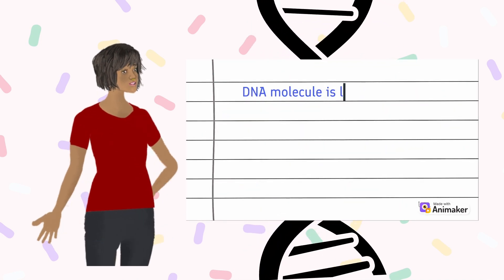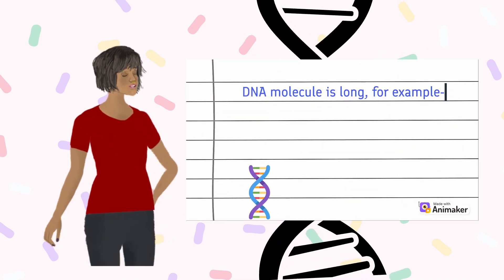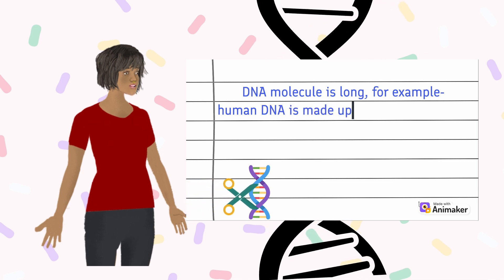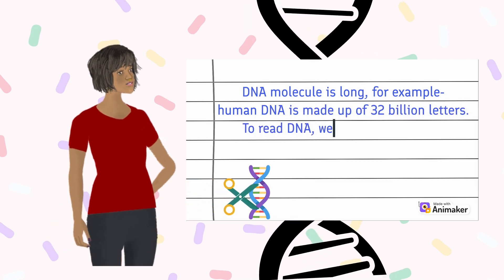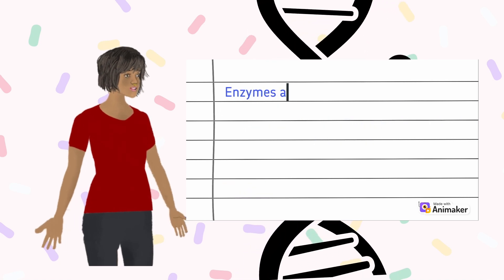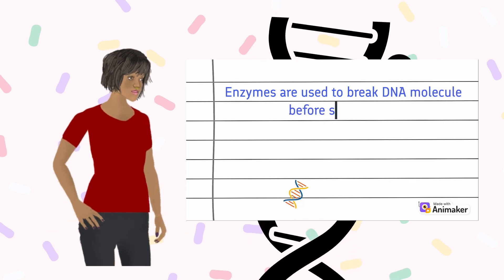DNA molecules are long. For example, human DNA is made up of 32 billion letters. To read DNA, we need to break it up into parts. Enzymes are used to break DNA molecules before sequencing.